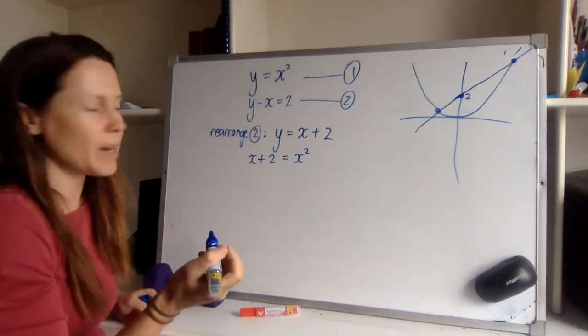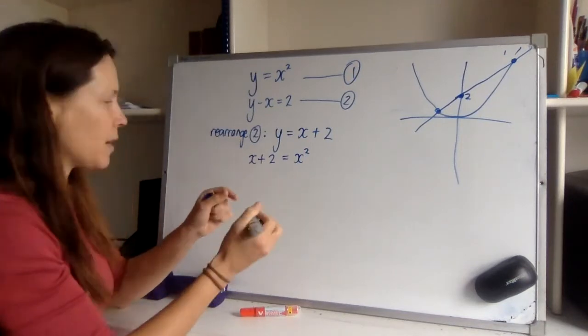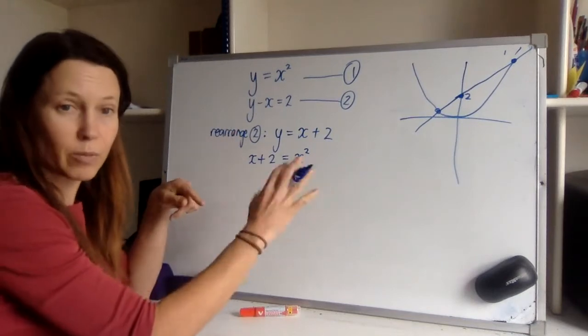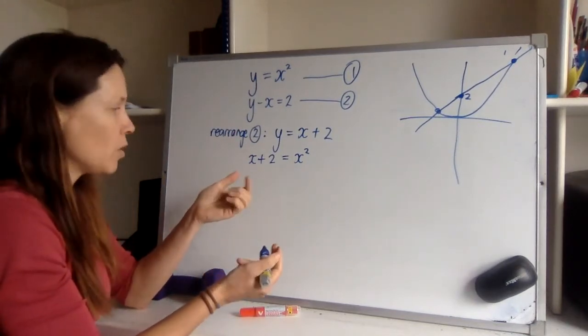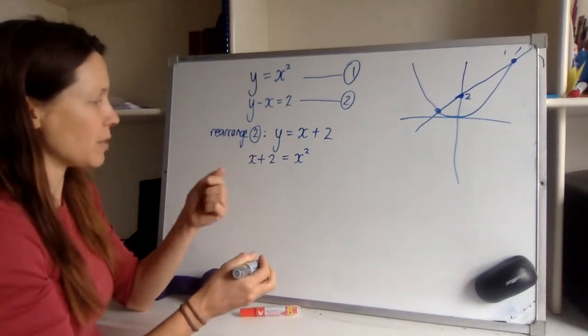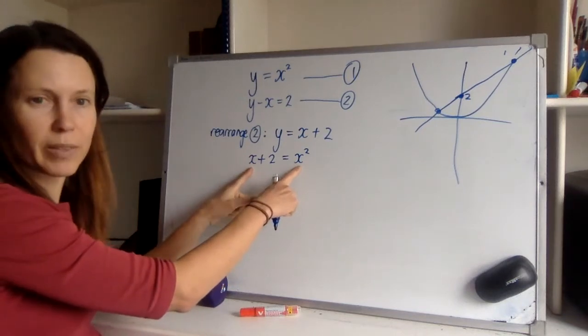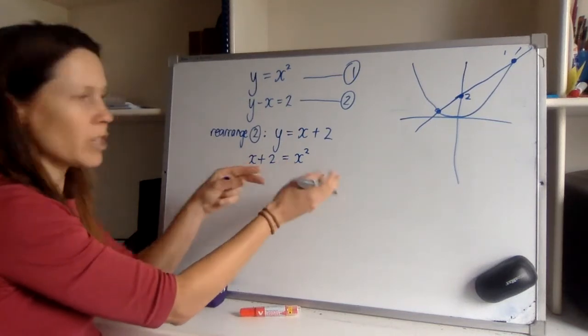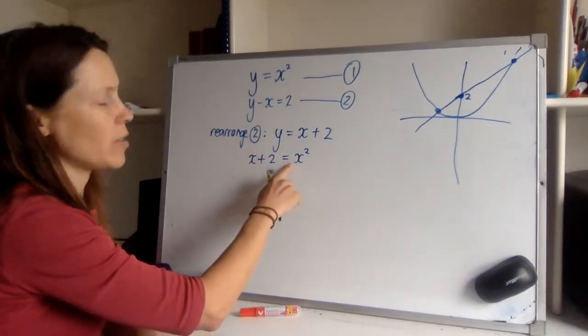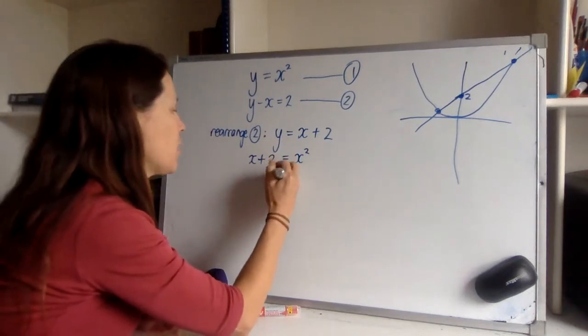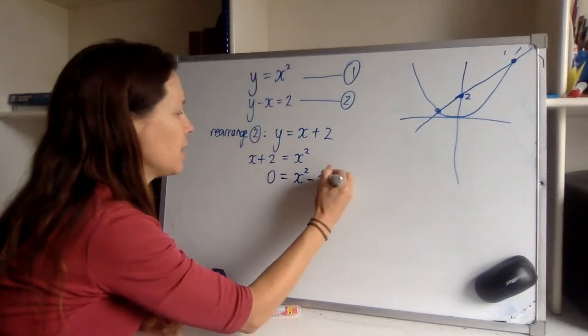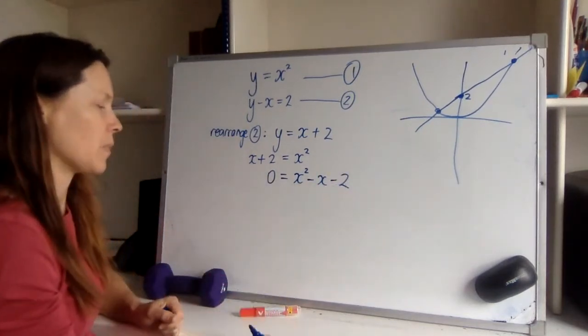When you try and solve these, you need to either use one of three methods. Either get everything onto one side so that it equals zero and then factorize it if you can, or if you can't factorize it, use the formula, or you could complete the square, but even completing the square means the x squared and the x need to be on the same side. Best strategy is to put everything on one side to start with. I'm going to put everything onto the right hand side so that I've got positive x squareds to work with. So I'm going to subtract x from both sides and subtract two from both sides like that.